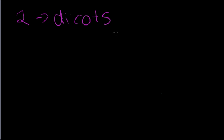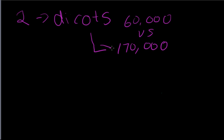There are over 170,000 kinds of dicotyledons. So 60,000 versus 170,000. I guess there are more dicotyledons than monocots in the plant world.